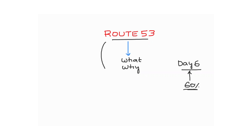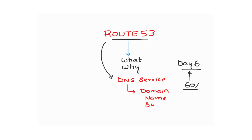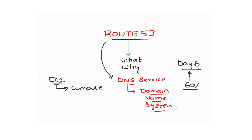Route 53 on AWS provides DNS as a service. DNS stands for Domain Name System. To understand this simply: when you use EC2, AWS provides compute as a service; when you use EKS, AWS provides Kubernetes as a service. Similarly, when you use Route 53, AWS provides you DNS as a service. But what exactly is DNS?